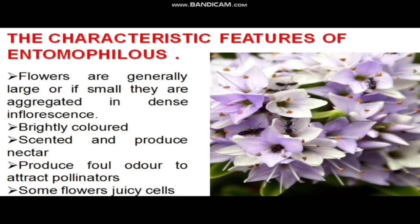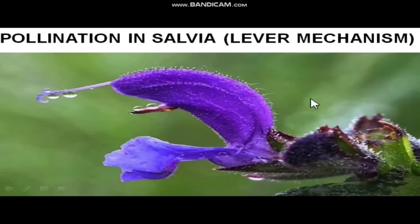Nectar should be present in huge quantity, and it should be present inside cells called juicy cells. Whenever the insect goes inside and pierces this cell, the nectar just oozes out. In that condition, the insect goes completely inside the flower, and whatever pollen grains they have on their body are deposited inside the flower, which is helpful in successful cross-pollination.